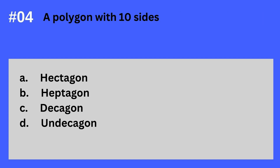Question 4. A polygon with 10 sides. A. Hectagon. B. Heptagon. C. Decagon. D. On Decagon. The answer? It's C. Decagon. A polygon with 10 sides — Decagon.